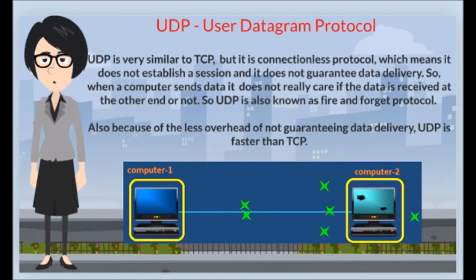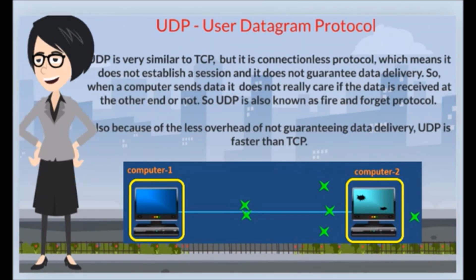UDP is very similar to TCP, but it is a connectionless protocol, which means it does not establish a session and it does not guarantee data delivery. When a computer sends data, it does not really care if the data is received at the other end or not. So UDP is also known as the fire and forget protocol. Also, because of the less overhead of not guaranteeing data delivery, UDP is faster than TCP.